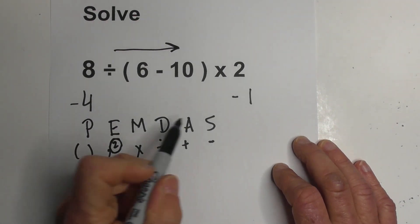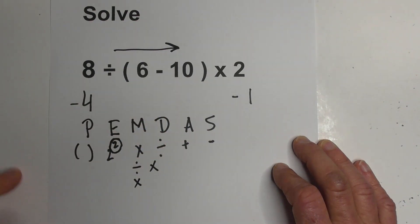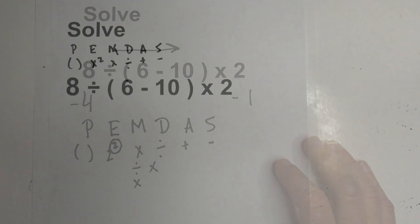And the same rules work for addition and subtraction. Addition does not always come before subtraction. It's whatever appears first. So they're kind of equal. Again, you always work from left to right.